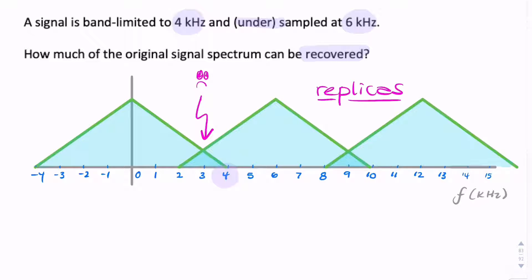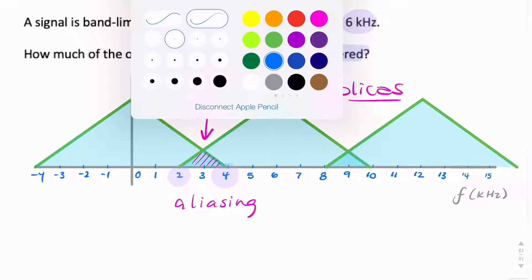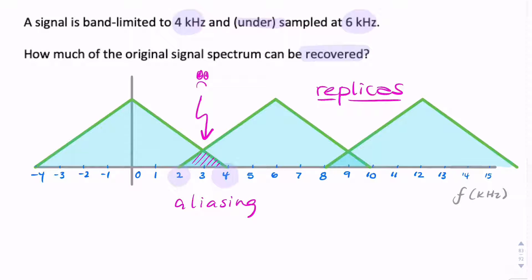That's what we're not happy about. Because here, the spectrum has been corrupted. There's no way we can filter that out. But you'll notice that the spectrum from 0 to 2 kHz hasn't yet been corrupted. So if you imagine for a second that we have a low-pass filter with a cut-off frequency of 2 kHz, we could still recover that portion of the spectrum.